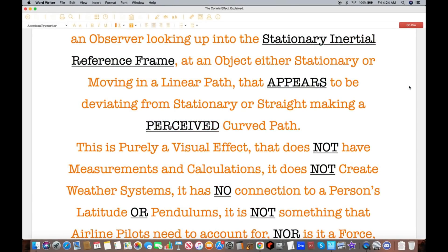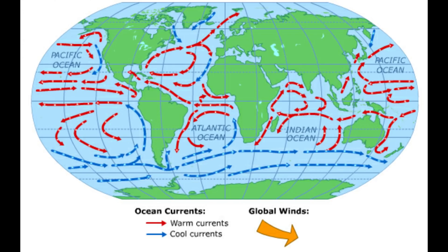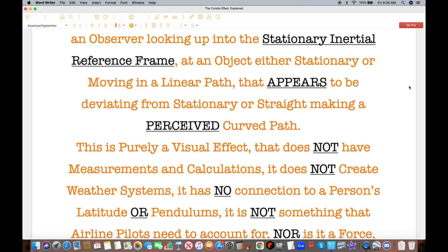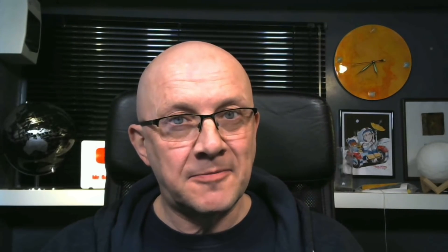It does not create weather systems, but it absolutely determines the direction of rotation of weather systems, both north and south of the equator, which rotate in opposite directions. And it also determines the direction of rotation of the Earth's ocean currents, which are different north and south of the equator. It has no connection to a person's latitude - actually, it has every connection to latitude. Depending on the latitude, Coriolis has different effects. Have you not heard of Foucault's pendulum, which behaves differently depending on latitude?